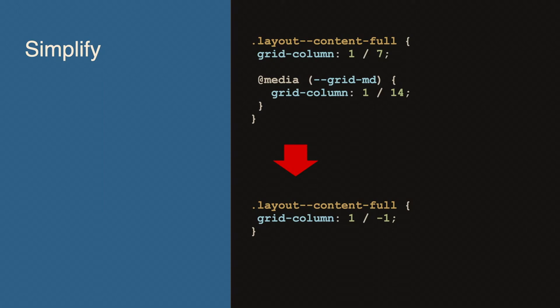Instead of saying '1 to 7' and '1 to 14', you can just say '1 to -1' and it'll always span full width. Is this already out of Olivero? Well, in Drupal 10 Olivero — I've been having so much fun ripping this code out. It's not completely out yet, but Drupal 10 Olivero is so much better than Olivero in Drupal 9, because it does not support IE11.